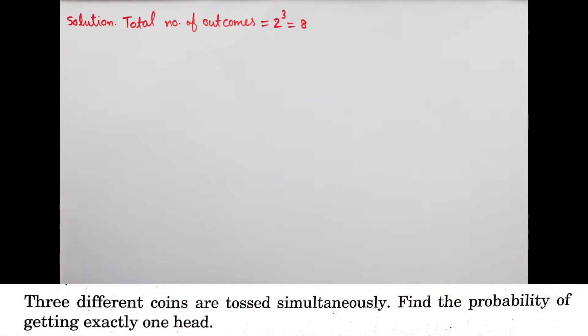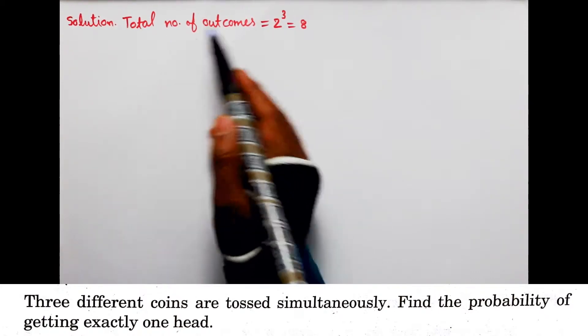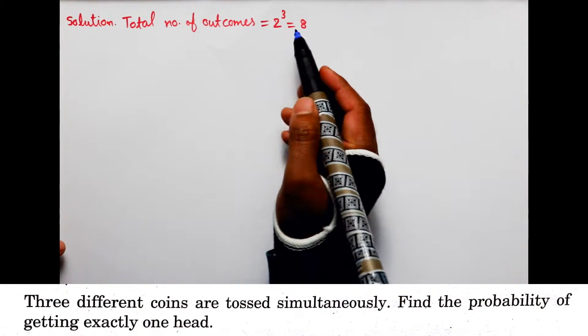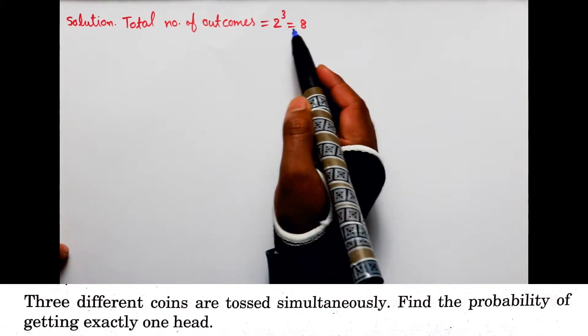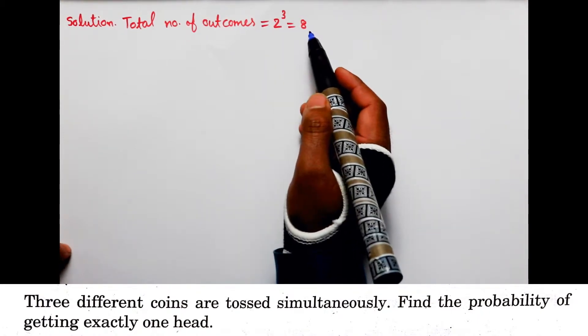सबसे पहले बच्चों, हम पता करेंगे total number of outcomes. Total number of outcomes होंगे 2 power 3, यानी 8.